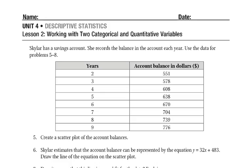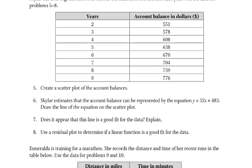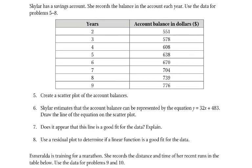Let's see when it looks really bad. So Skylar has a savings account. She records the balance in the account each year. We want to create a scatter plot, and then we use this equation y = 32x + 483 on the scatter plot. We're asking, is it a line of good fit? And we use a residual plot to do that. Let me pull that one up.